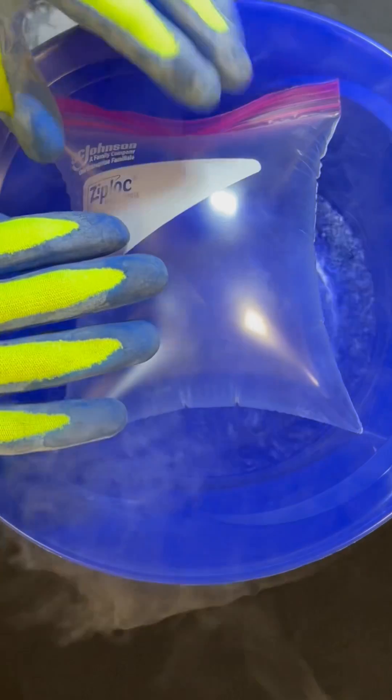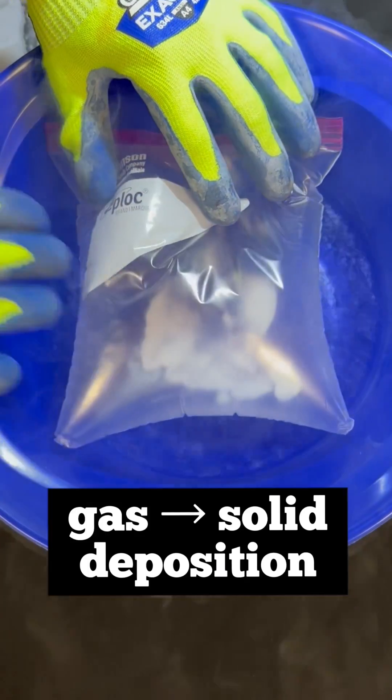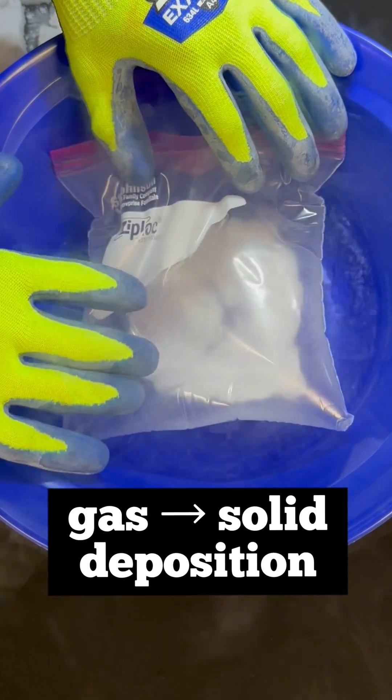On the flip side, if carbon dioxide gas is cooled to below negative 78 degrees Celsius, it transitions back to a solid. This is called deposition.